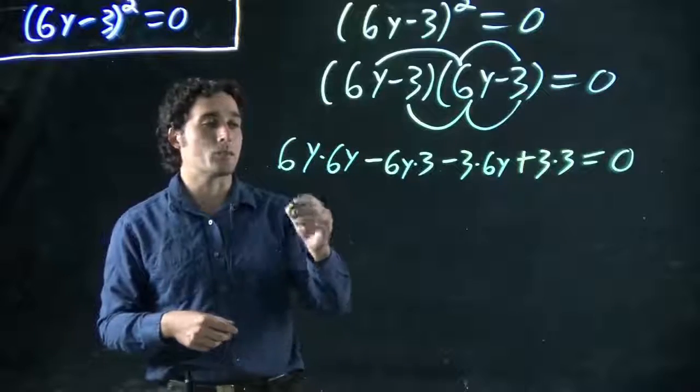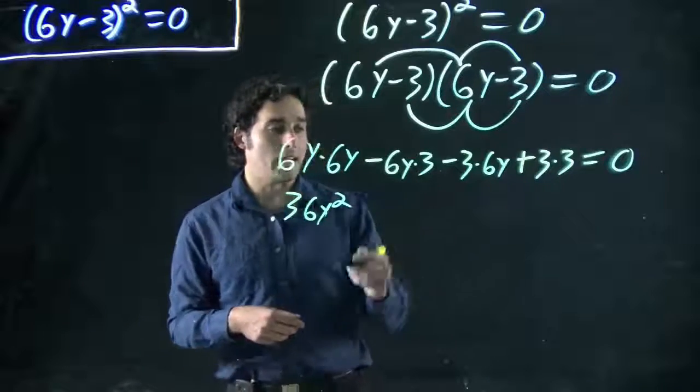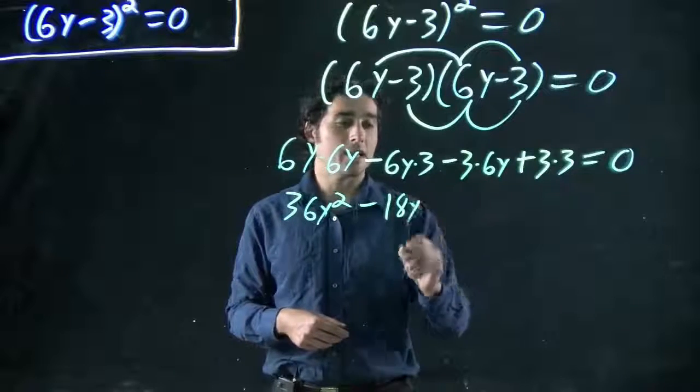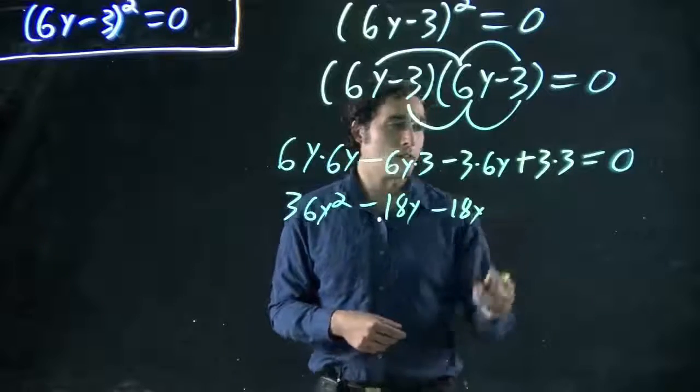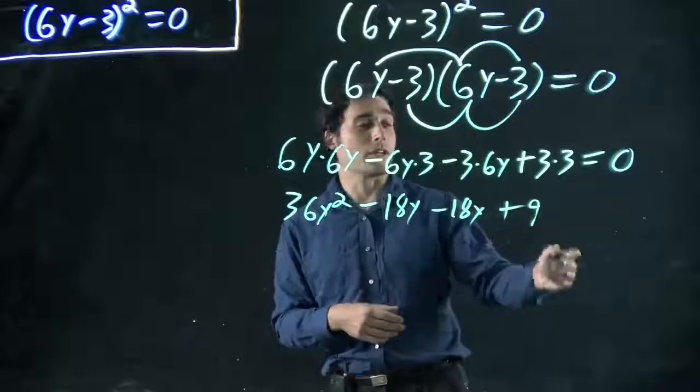So 3 times 3. All this equal to zero. So, what do we got? 6y times 6y, or 36y squared. 6y times 3. Well, we get 18y. And this is the same thing. So we're going to get another 18y. And finally, 3 times 3, or 9. Which we were just talking about, actually. Happy coincidence.